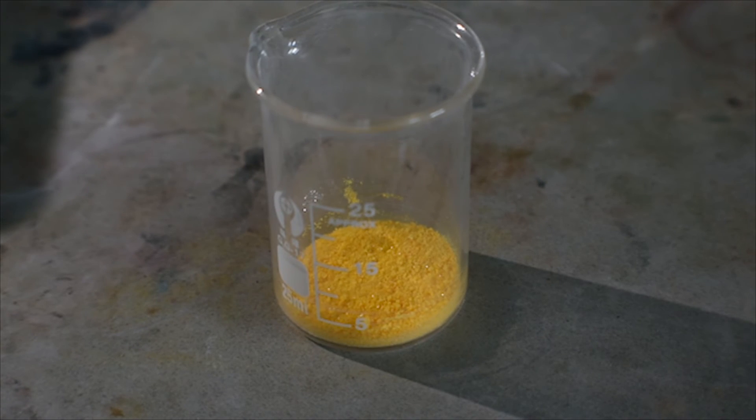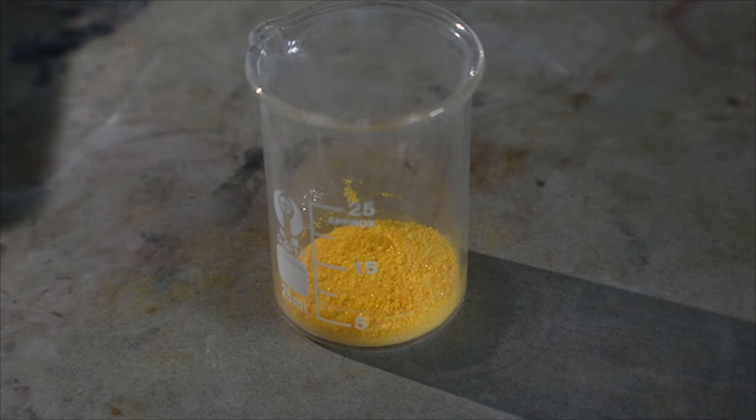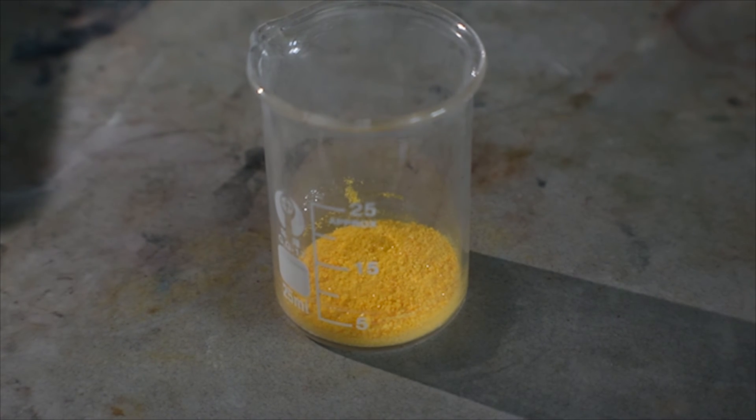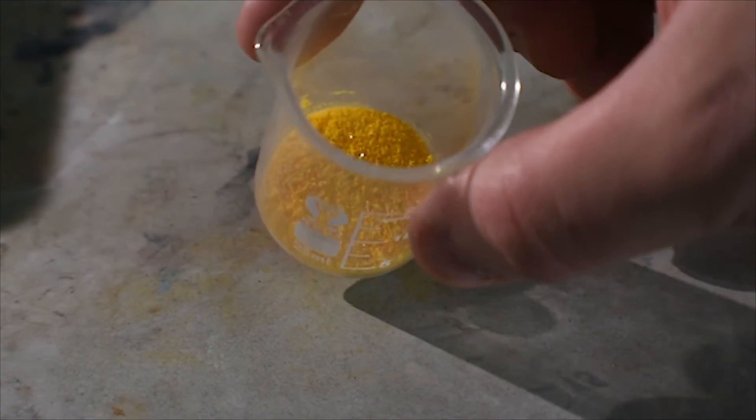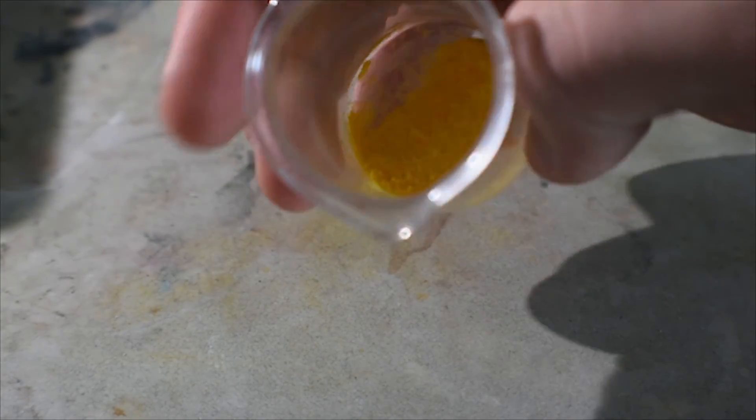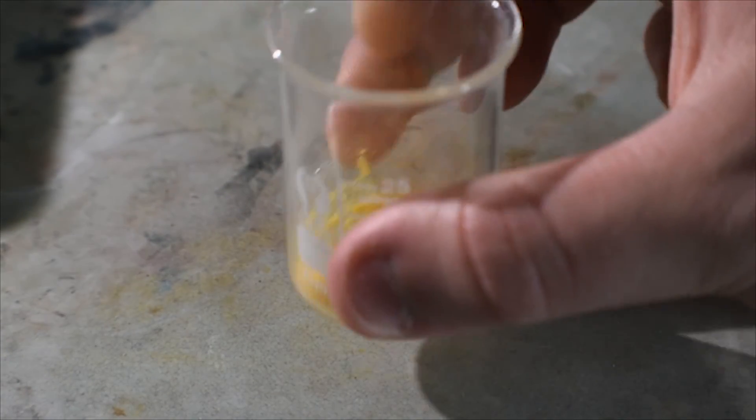So here's the solid cesium tetrachloroiodate after drying. A nice golden-yellow solid with a crystalline texture to it that is free-flowing and does not absorb moisture from the atmosphere. It is stable in storage and does not release any iodine trichloride.